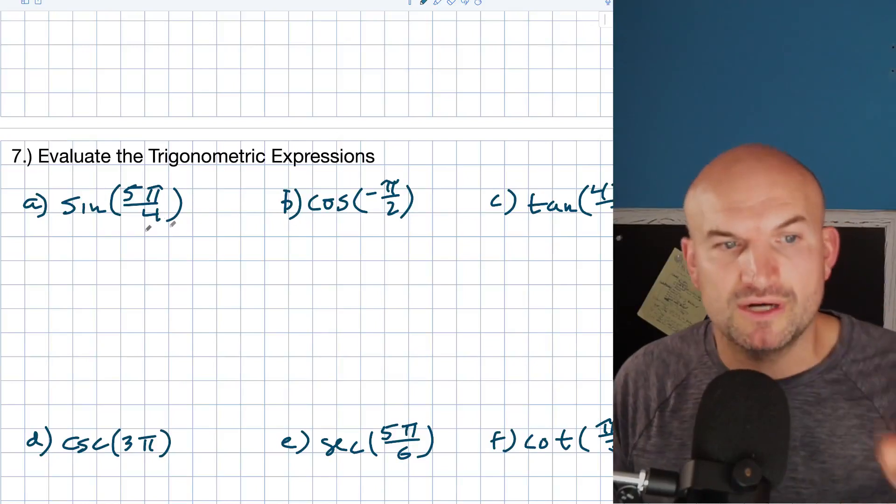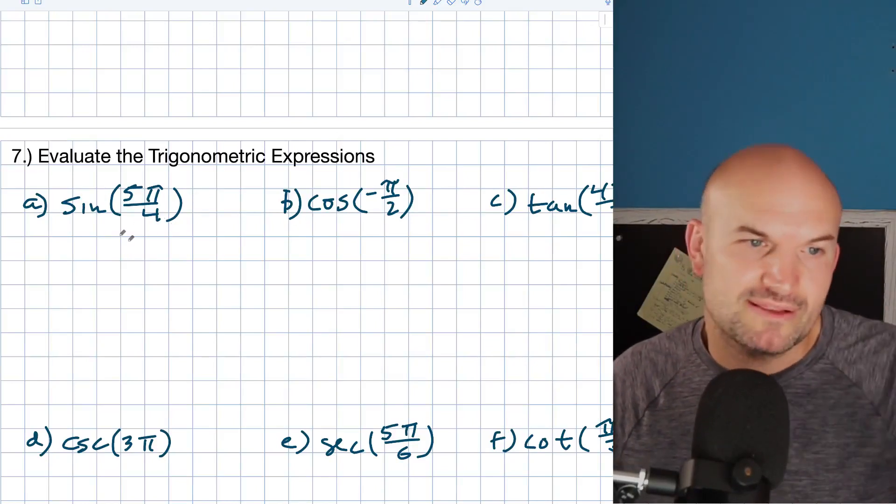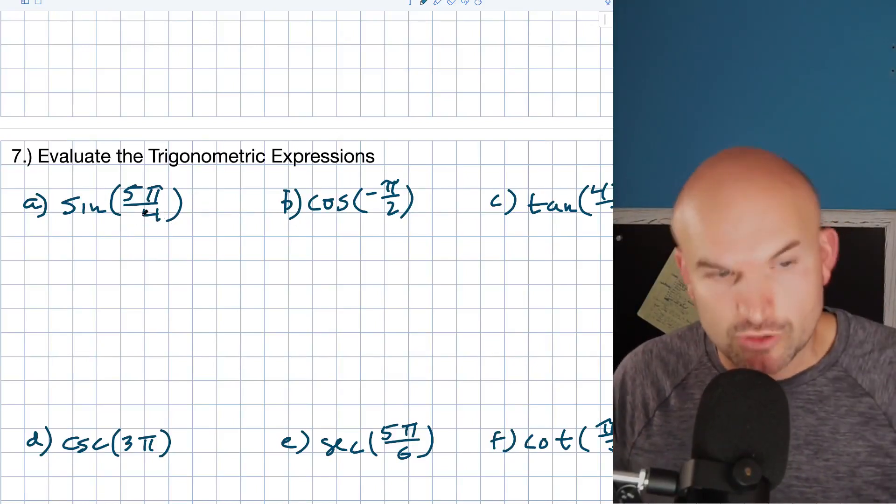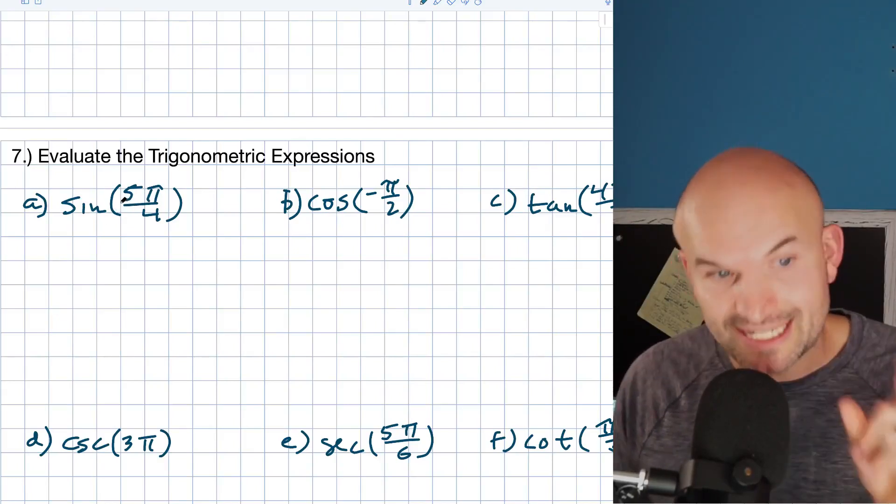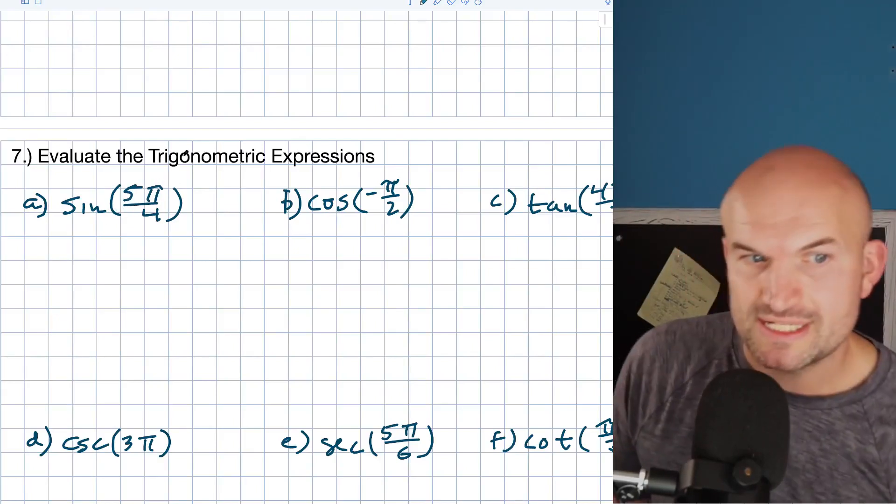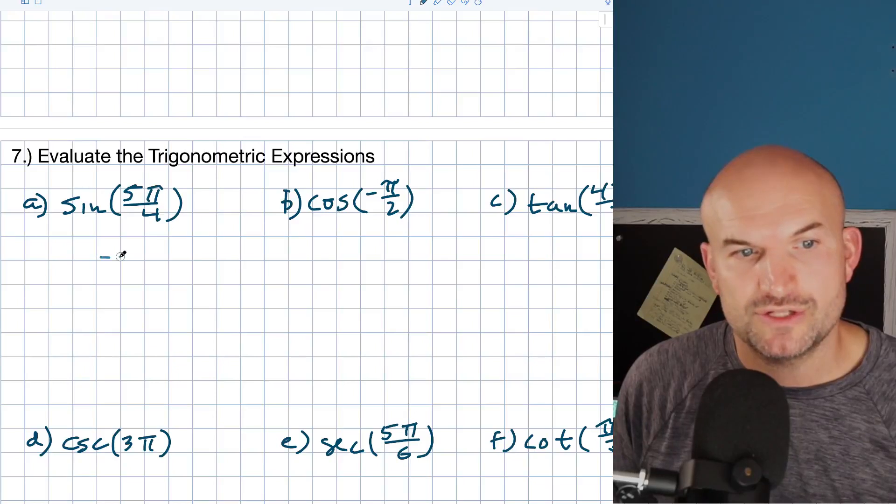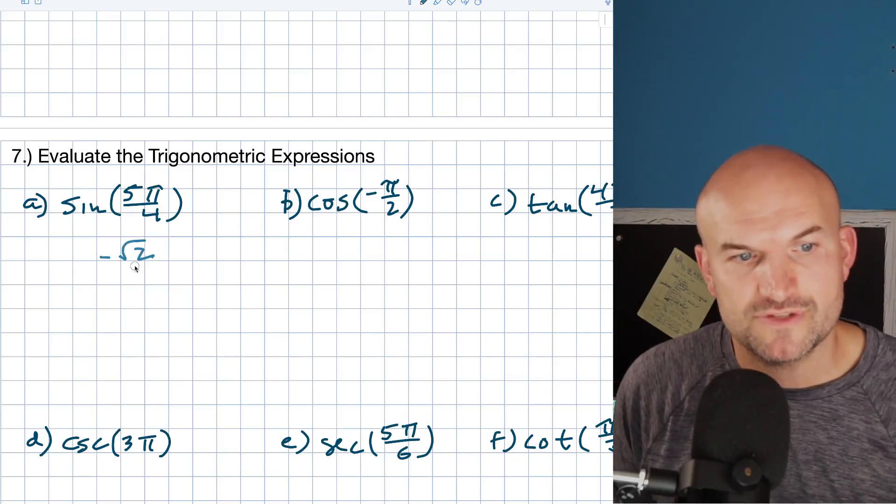The sine of 5π over 4, I'll kind of talk my way through it. That is 5π over 4. That is going to be in the third quadrant. That means my y coordinate is negative. The coordinate point here is going to be a square root of 2 over 2. Therefore, that's going to be a negative square root of 2 over 2.